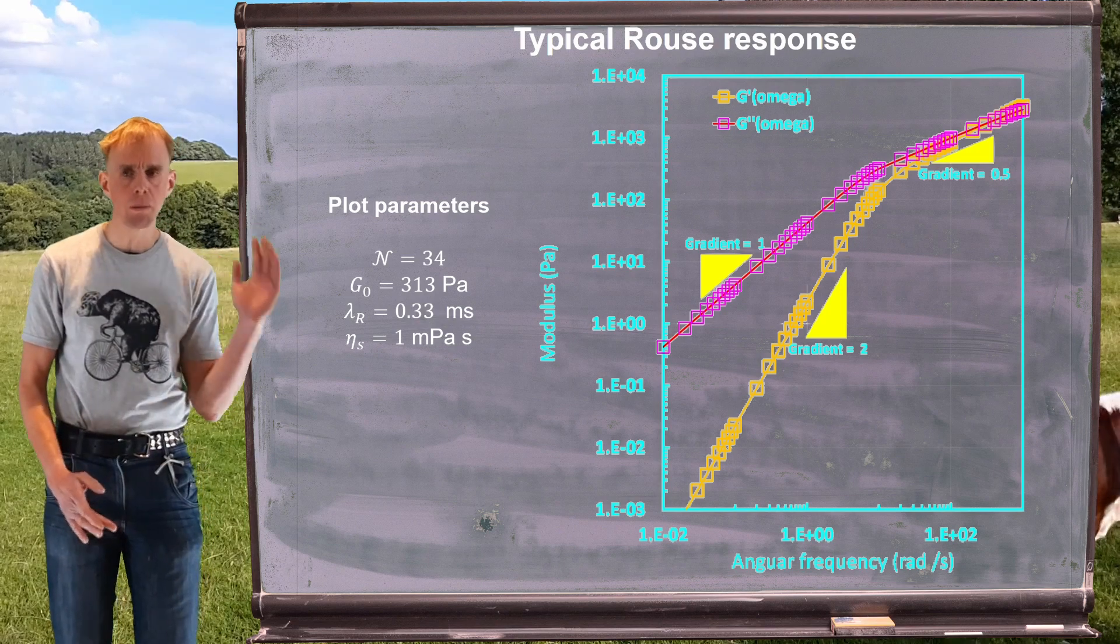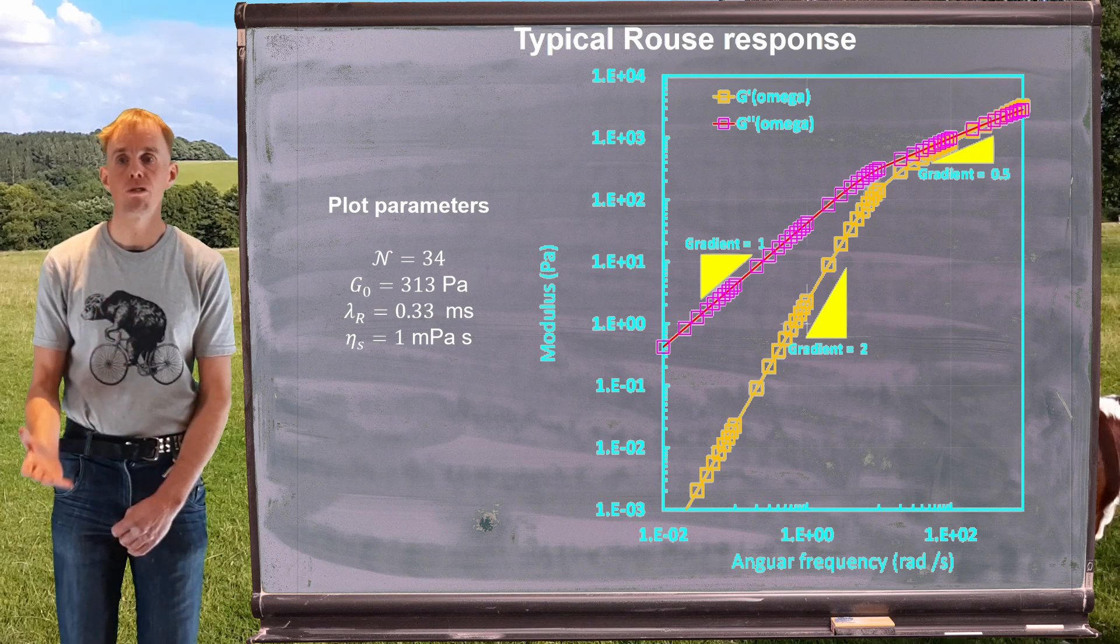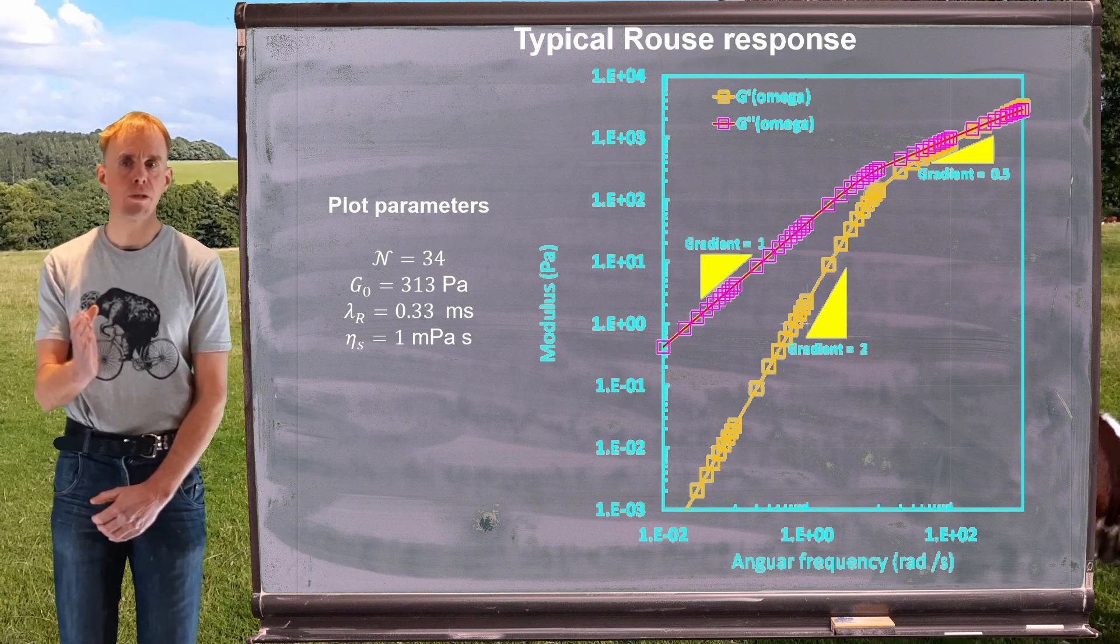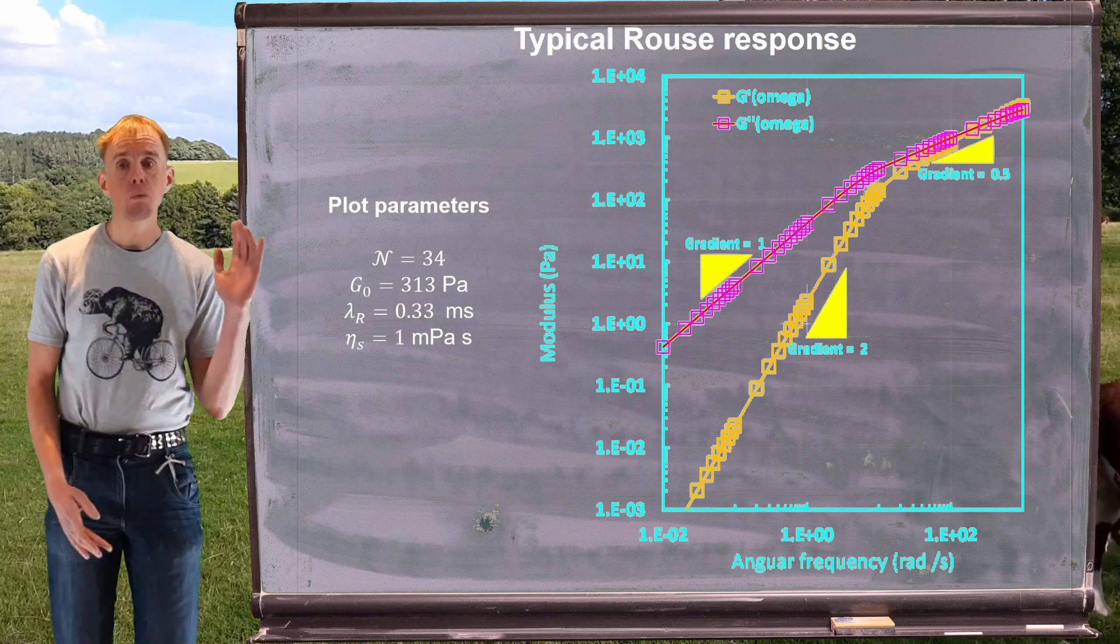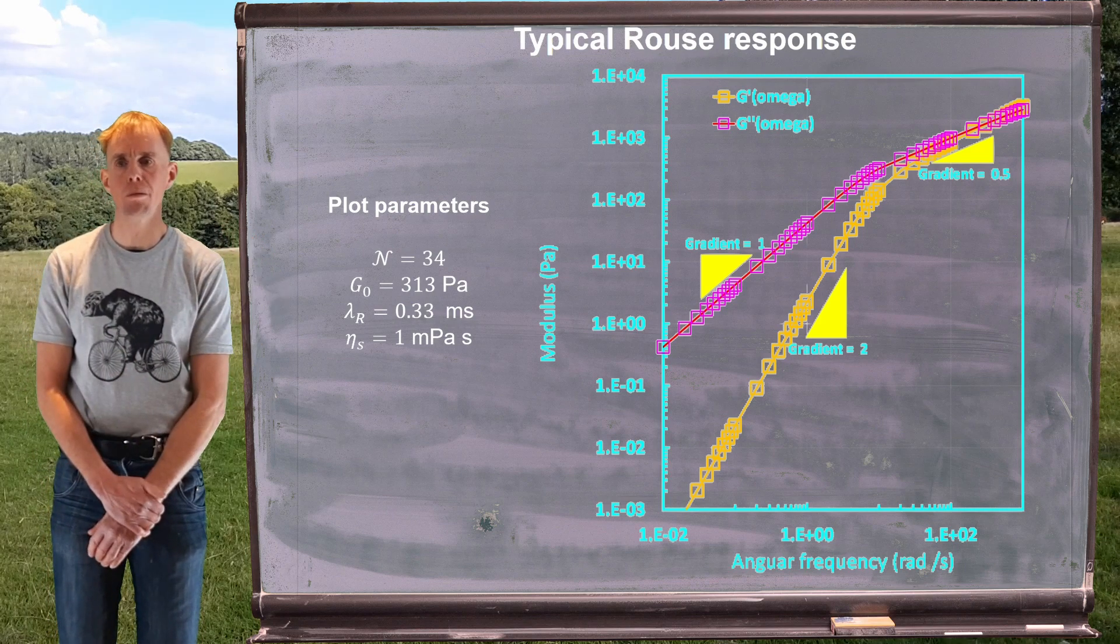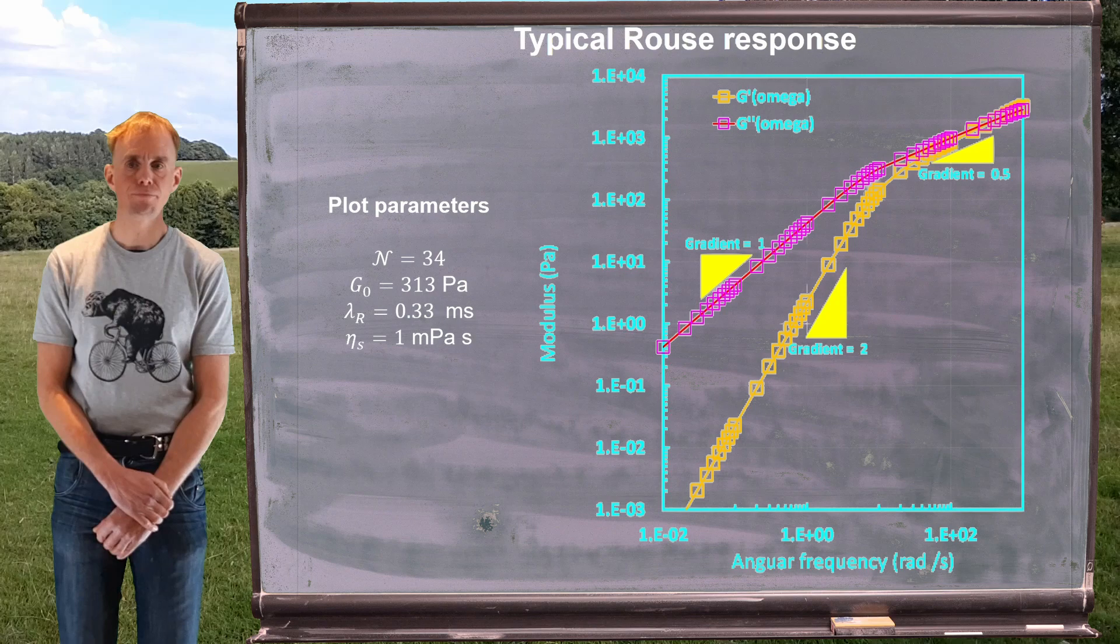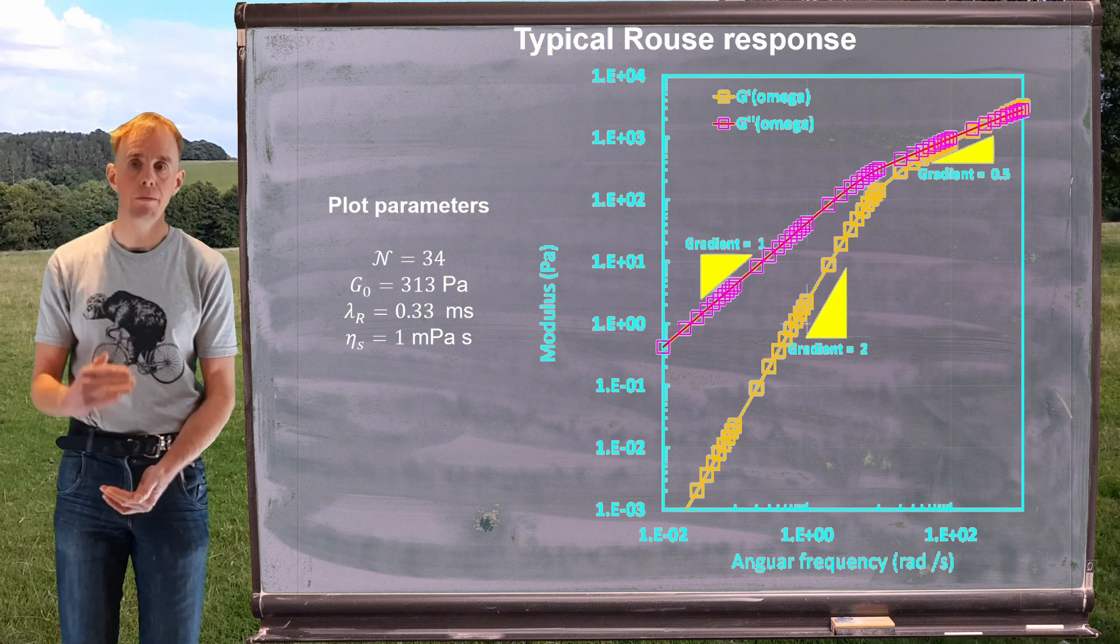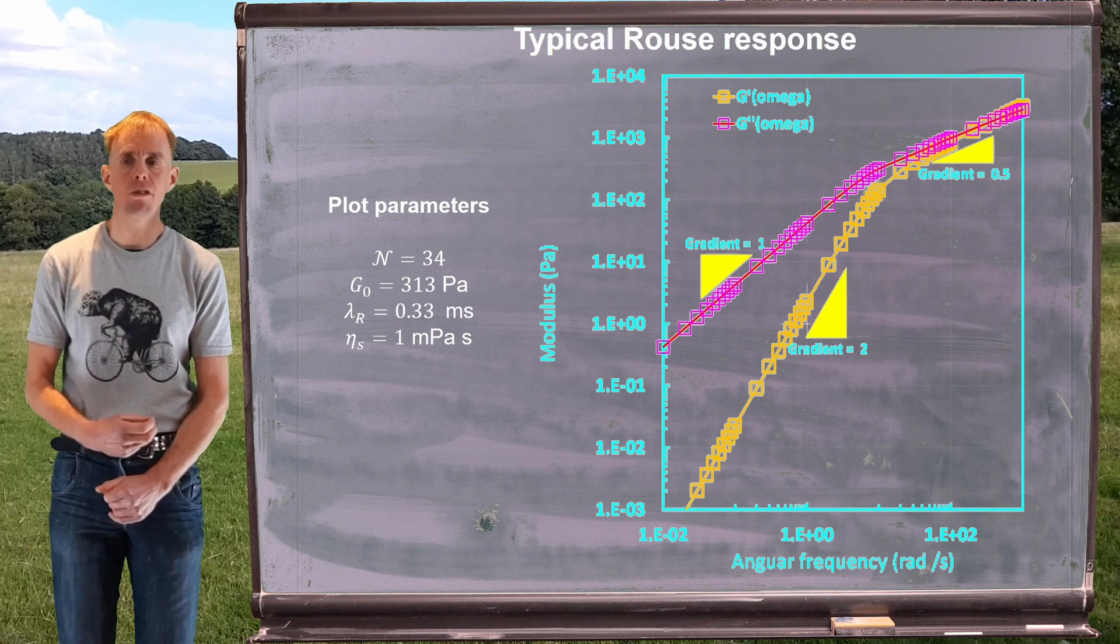If we look at this plot, the thing to note is that we have effectively viscous dominated behavior at low angular frequency. Then we get towards a critical angular frequency where you've got almost equal contribution of the viscous and elastic modulus. If we look at the gradients of these lines, if we look at the viscous modulus first, the purple trace G'', we can see it starts with a gradient of one and then ends up being a gradient of a half. If we look at the elastic modulus, it starts with a gradient of two and ends up again being a gradient of a half.